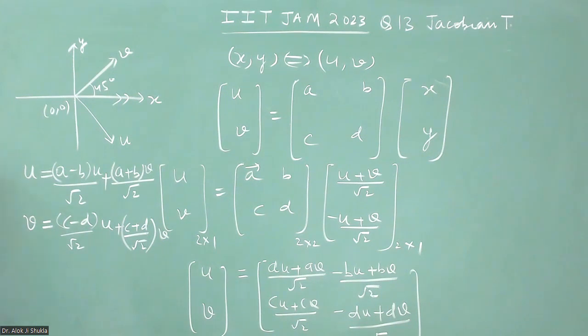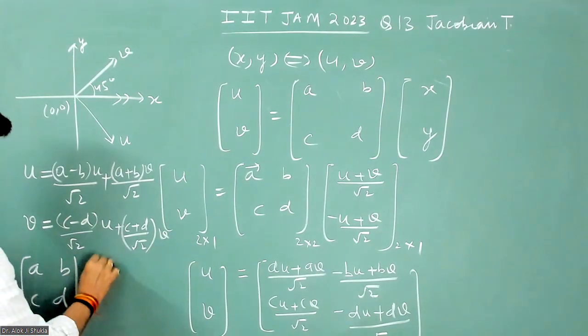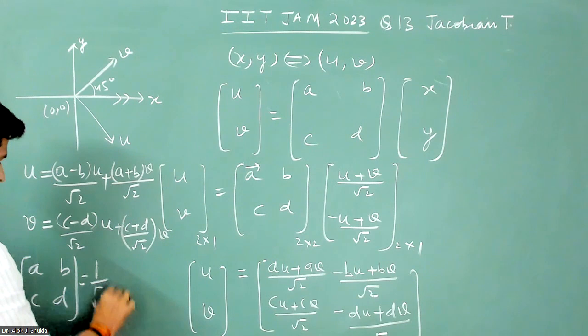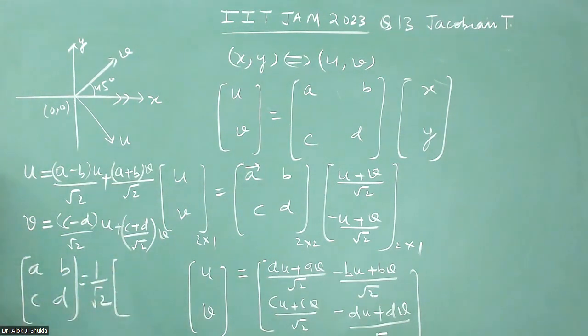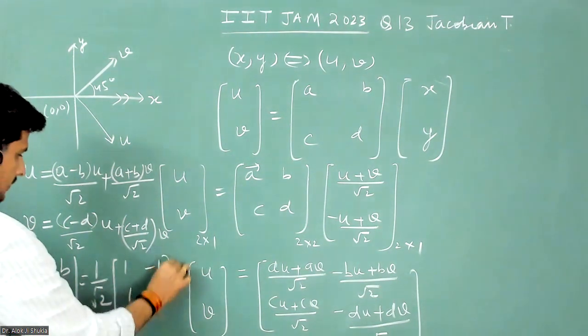So comparing the coefficients, what we get is the value of A, B, C, D will become equal to one, one, zero, and one by root two, and one minus one.